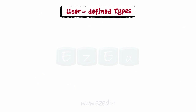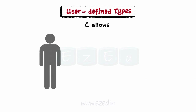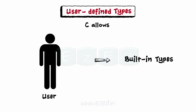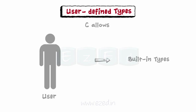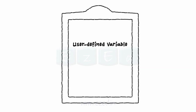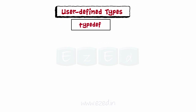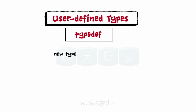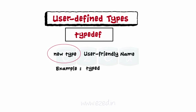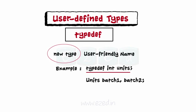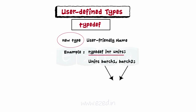C allows us to create our own data types as references to built-in types, known as user-defined types. They are fields defined by a user in the program. The first keyword to explore is typedef. With this keyword we can define a new type and give it a user-friendly name. For example, this code tells the compiler we want to define a type named 'units' of type int. To use this new type, batch1 and batch2 are defined as type units, which is in turn of type int.